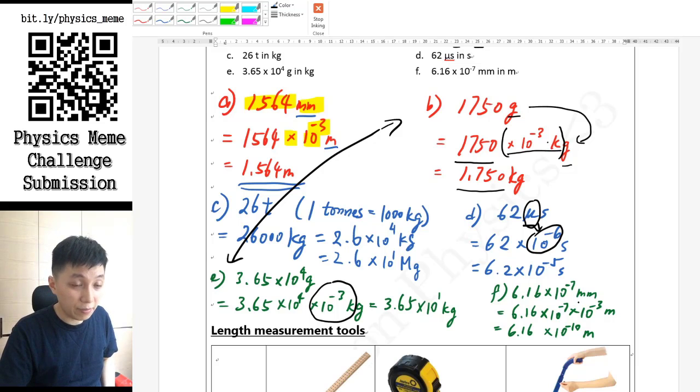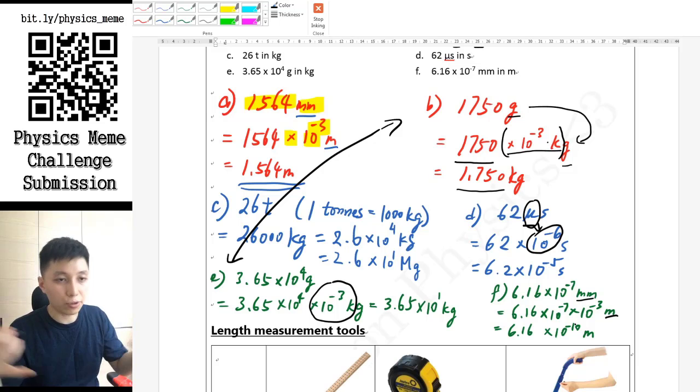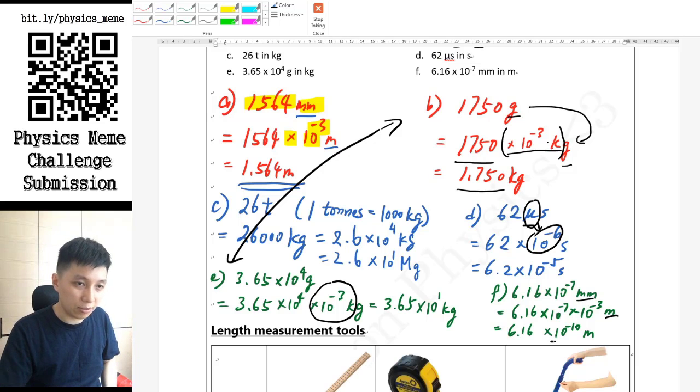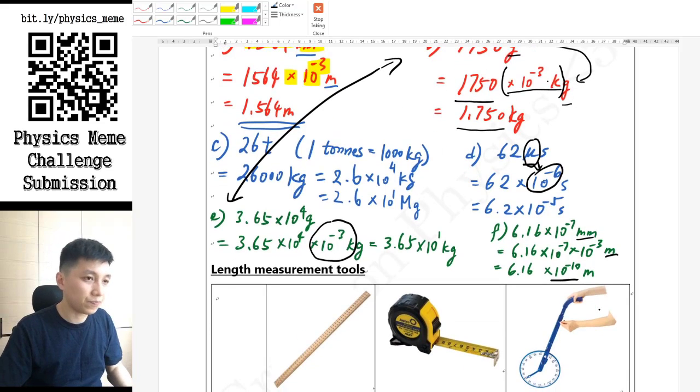As for part f, it's actually quite easy too because it's converting millimeter to meter. So you know milli is once again 10 to the power of negative 3, and so you just have to calculate, merge them together. You get 10 to the power of negative 10 meters at the end. And that's all for the practice—very simple, isn't it?